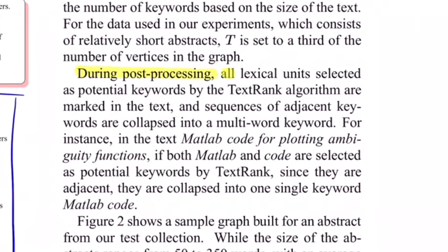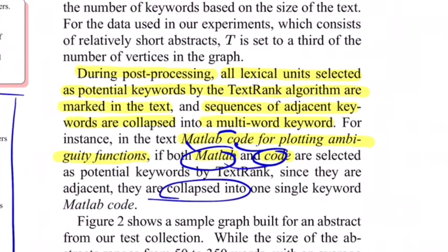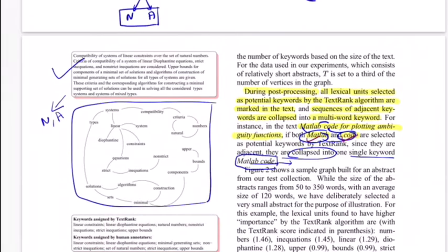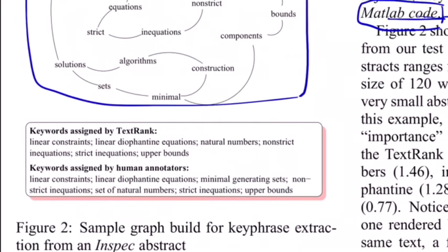During post-processing, all lexical units selected as potential keywords by the TextRank algorithm are marked in the text, and sequences of adjacent keywords are collapsed into multi-word keywords. For example, if the text was 'MATLAB code for plotting ambiguity functions' and MATLAB and code were part of keywords at unigram level, you run a keyword spotter back to the original text. If MATLAB and code occur adjacent to each other, you collapse both into a single keyword, MATLAB code. The post-processing step works fine, we get multi-word phrases, and the quality is comparable to human annotators.